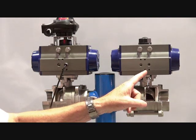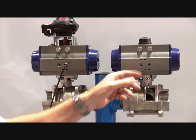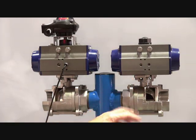Double acting means that we can put air on one side, the unit will rotate in one direction. Air on the other side and the unit will rotate back again. Remove the air and the actuator stays in position.